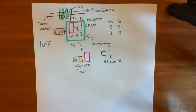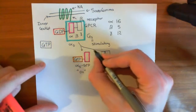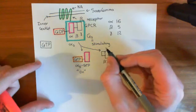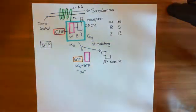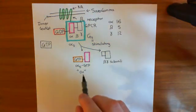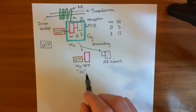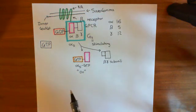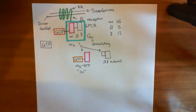The alpha-S GTP complex is now going to go and activate adenylyl cyclase enzymes, and we'll continue this discussion in the next video.